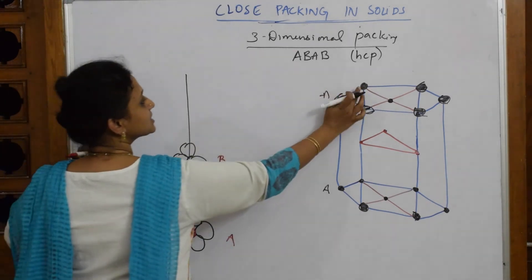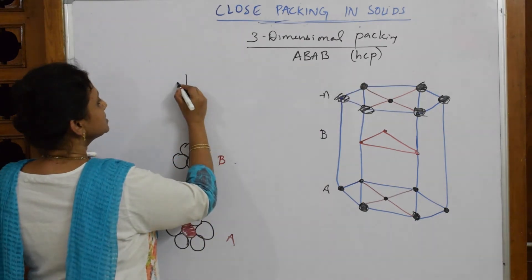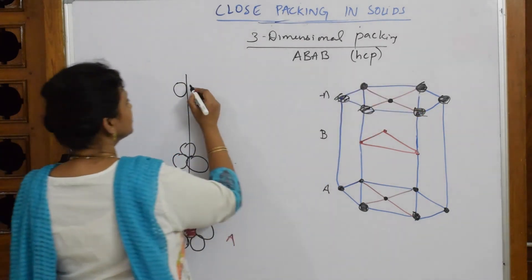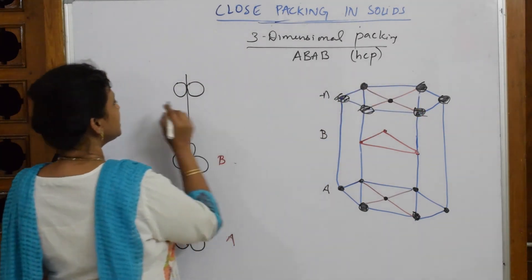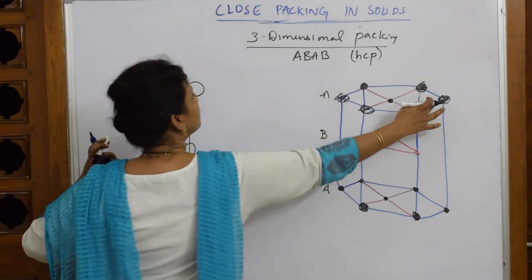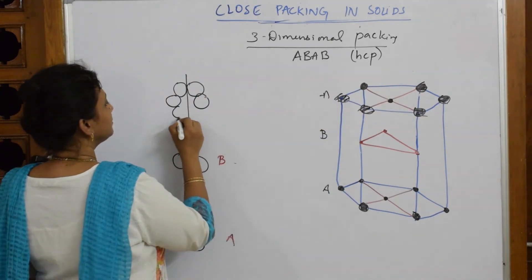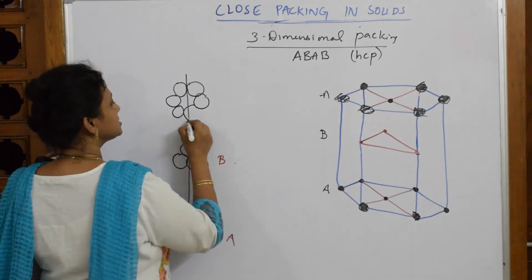Now again you have layer A. In layer A, how many do you have? Six atoms. Start from here: this is one, this is two, this is three, this is four, fifth atom, six.